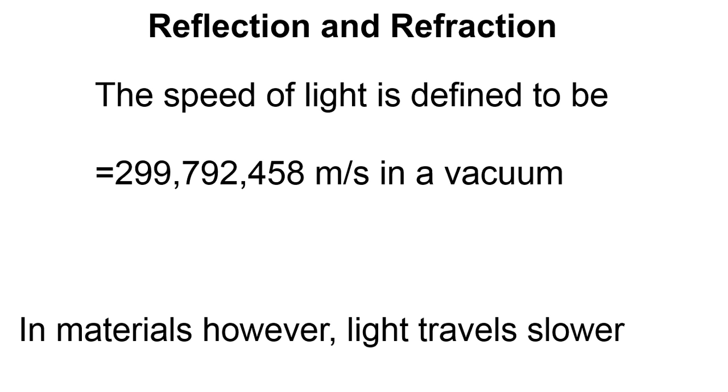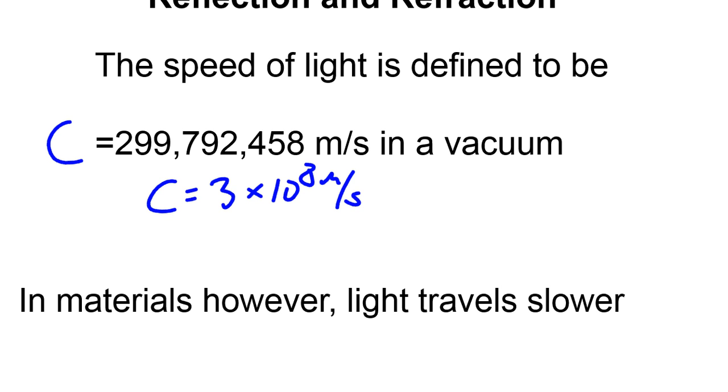Where we have to start with these concepts is light itself. We define that the speed of light in vacuum is C equals 299,792,458 meters per second. Oftentimes, we just round that off and say C equals 3 times 10 to the eighth meters per second. The important fact, though, is in other materials like water, oil, et cetera, light travels at a slower speed.